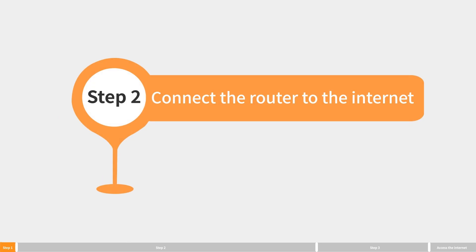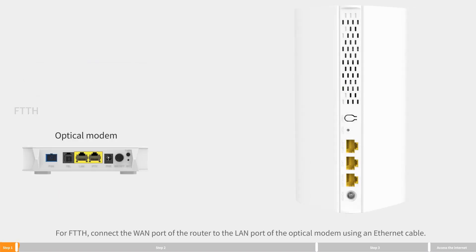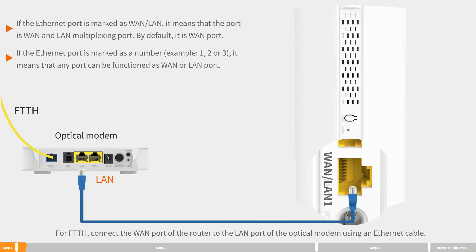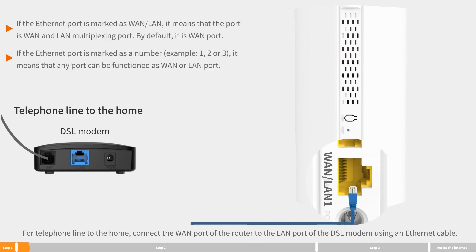Step two: connect the router to the internet. For FTTH, connect the WAN port of the router to the LAN port of the optical modem using an ethernet cable. For telephone line to the home, connect the WAN port of the router to the LAN port of the DSL modem using an ethernet cable.